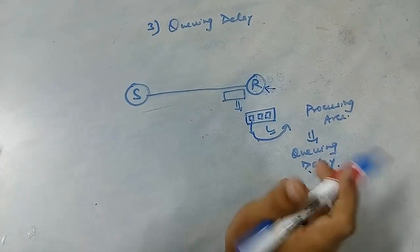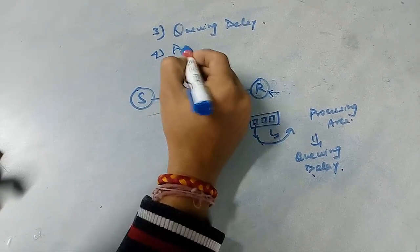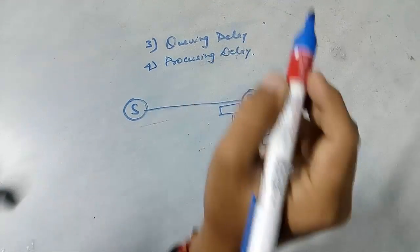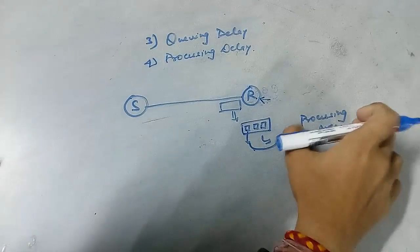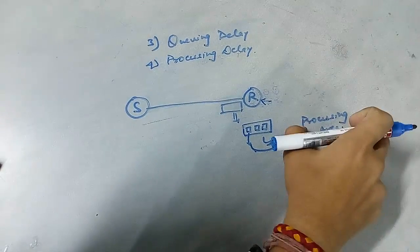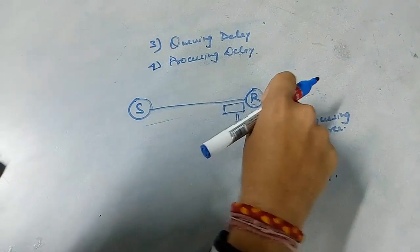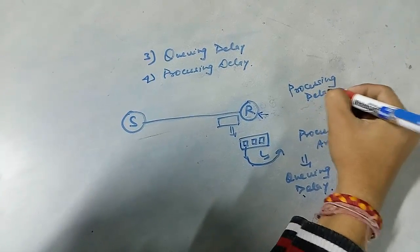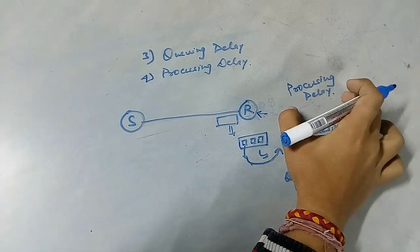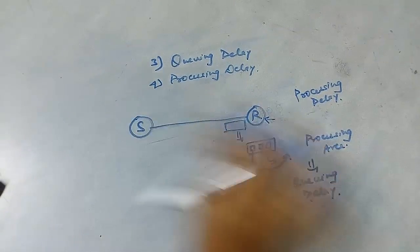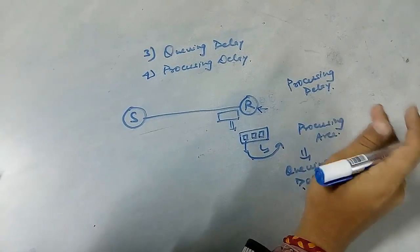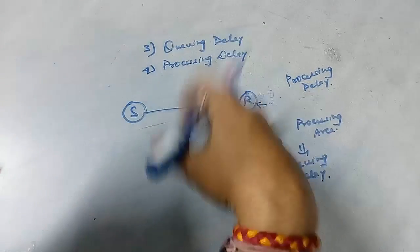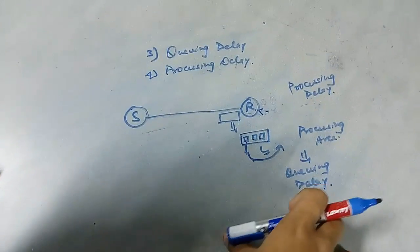Now we'll talk about the fourth type of delay: processing delay. Once the packet has reached the processing area, the time taken by the packet to get processed by the processor of the receiver is known as processing delay. It also depends on the processing speed of the receiver, so there is no general formula. Queuing delay and processing delay can be considered formula-less. That was all about the different delays in computer networks.